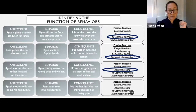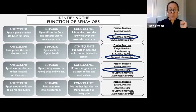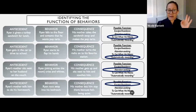The last example: Ryan's mother tells him to do his homework. Ryan runs away into his bedroom. His mother lets him stay there because he's being quiet. What was the function of that behavior? Escape/avoidance — and he got it.